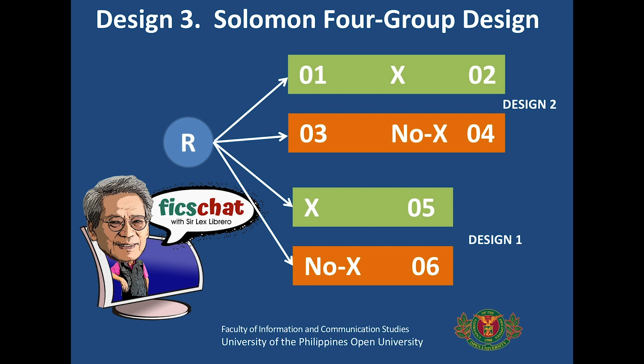In Design Two, we were concerned about the research design's possibility of sensitizing the respondents of the groups because of the pre-test. But this is not present in Design One. So, putting together Design One and Design Two, we are now going to take the strengths of both designs into one design. That is the Solomon IV Group Design.